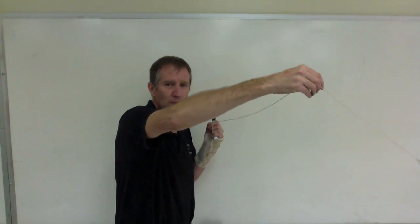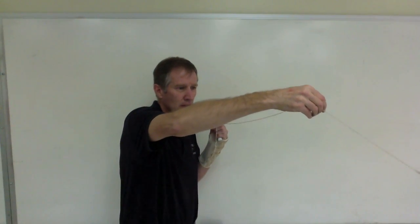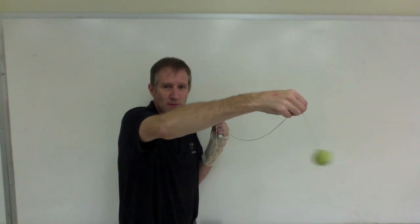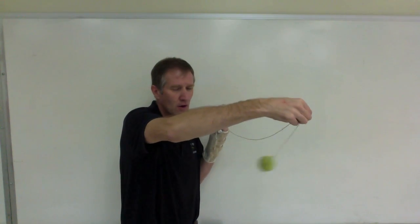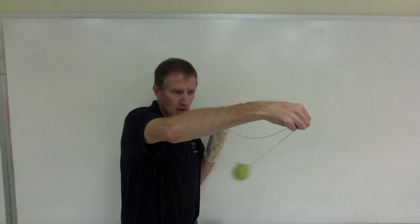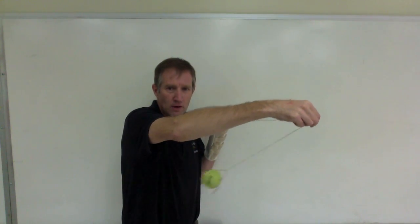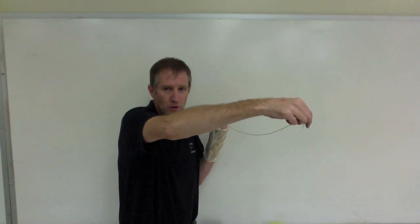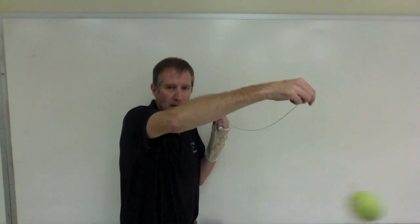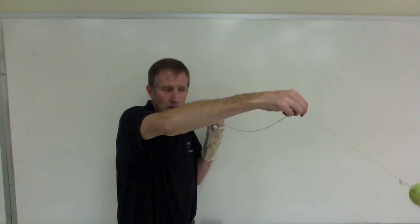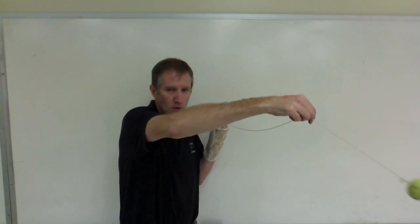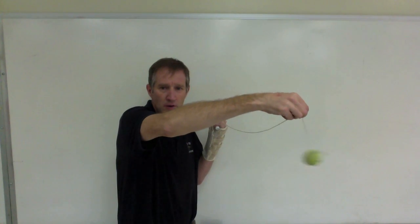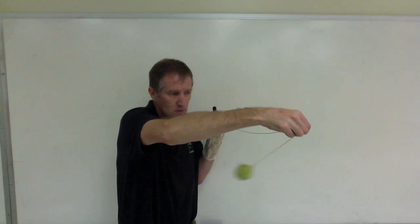Here I have a conical pendulum. It's called a conical pendulum because, including the string, it sweeps out a cone. And it has a very specific period — the time it takes to go around once. The ball is going around in a horizontal circle.